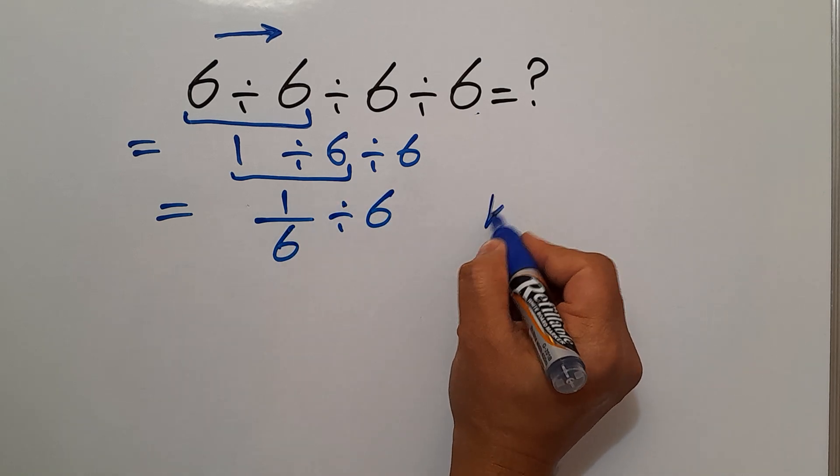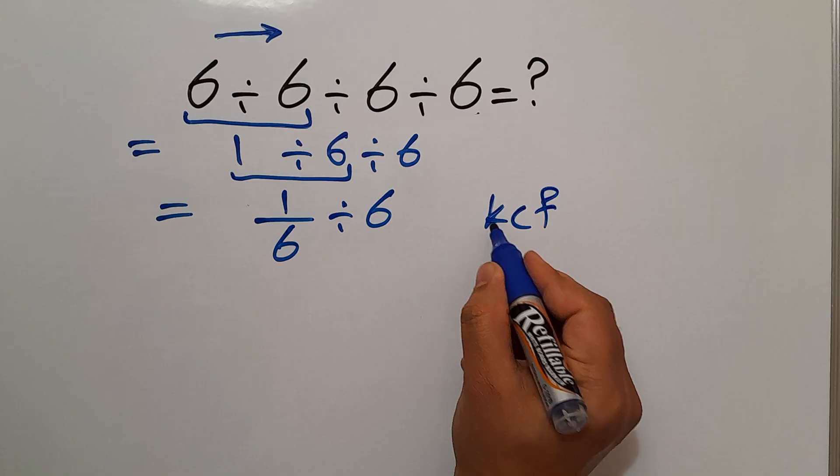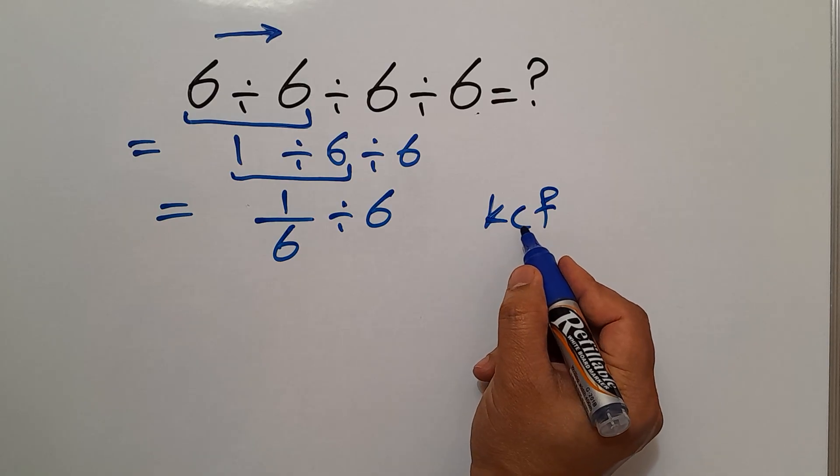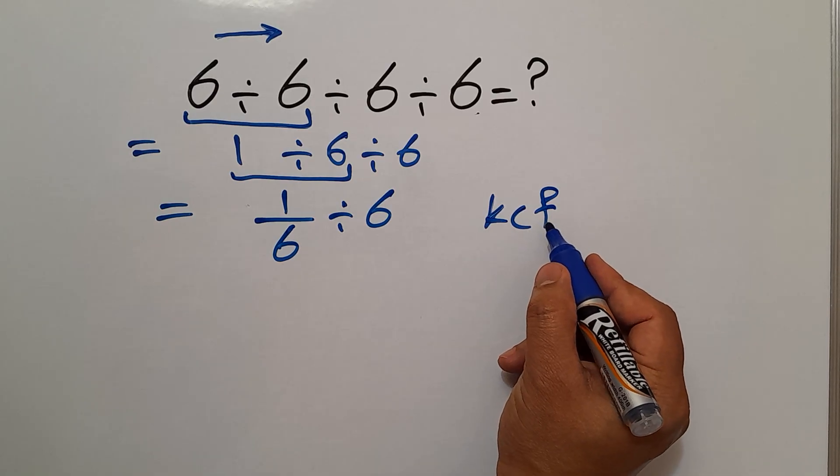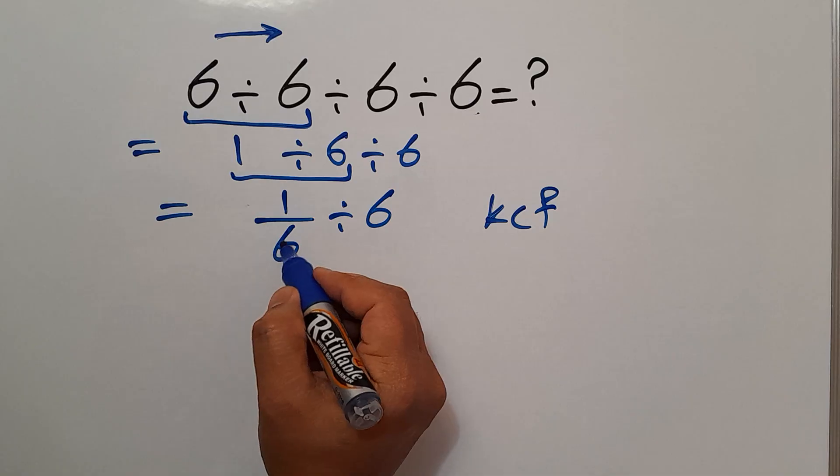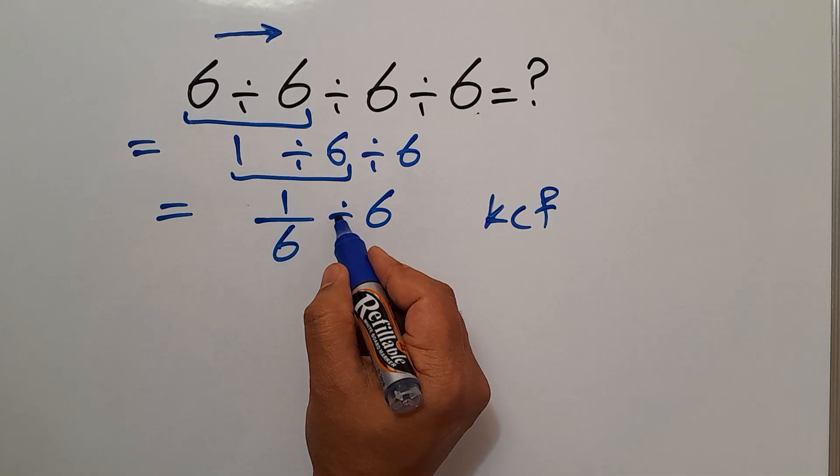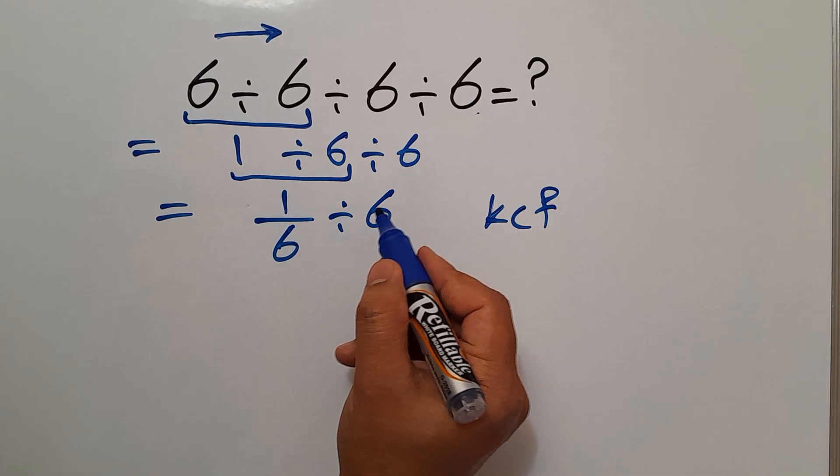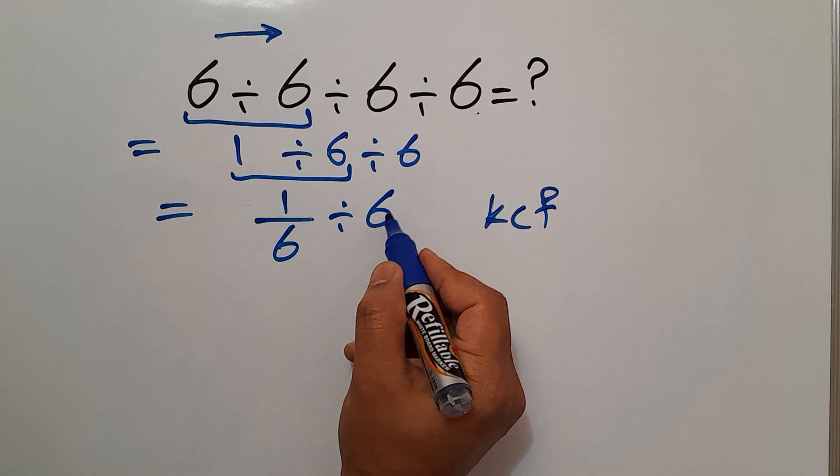We have a KCF rule. K stands for keep, C stands for change, and F stands for flip. Keep the first fraction, change division to multiplication, and flip the second fraction.